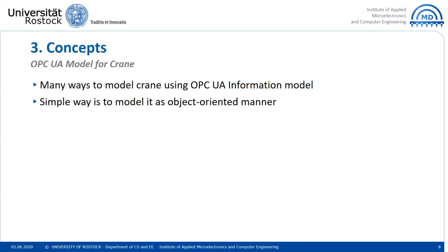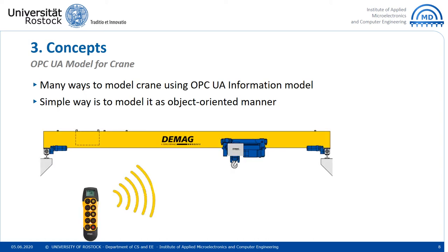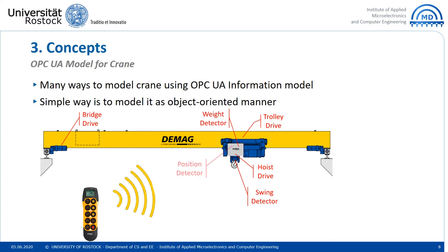There are many possibilities to model a crane using the OPC UA information model. Our OPC UA model considers the concrete structure of the overhead travelling crane and its basic functions. As an alternative, a companion specification could be used, but this is not available for cranes. The overhead travelling crane consists of a bridge that moves on rails fixed to the walls. A trolley with hoisting mechanism moves along the bridge. With the hoist, items are lifted. Bridge, trolley, and hoist each have at least one drive. Additional components are swing detector, weight detector, and position detector.